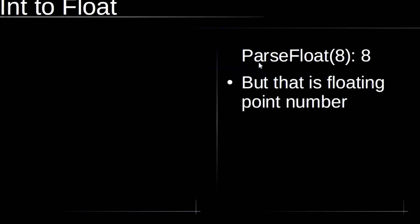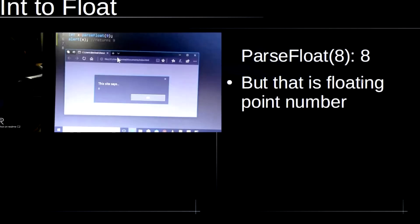Now let's see how to convert an integer to a floating point number. We use parseFloat instead of parseInt. For example, passing 8 returns 8, but that value is a floating point number.